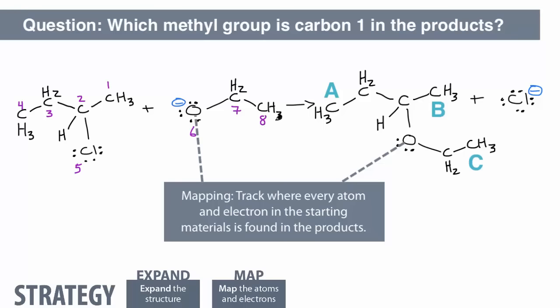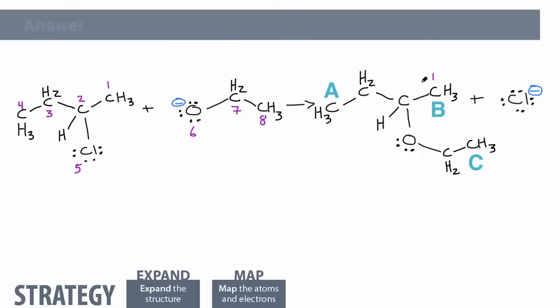Which methyl group is carbon-1 in the products? The methyl group next to the methine, the CH, is carbon-1 in the products. It's next to the same group as it was in the starting materials.